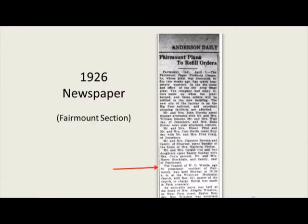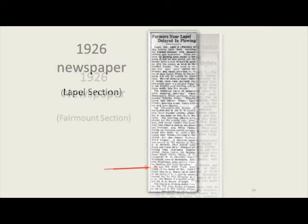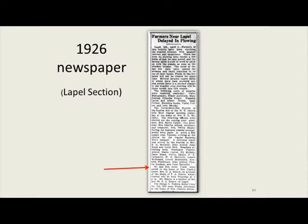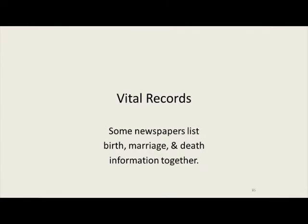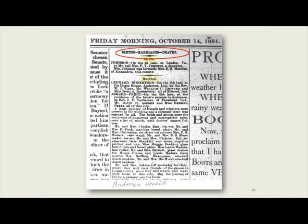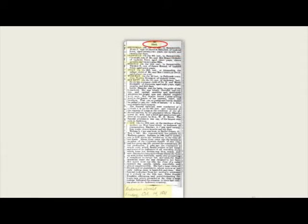Often when you're skimming for your ancestor's name, it pops out at you anyway. Here's the 1926 Fairmount section from the Anderson Daily Bulletin — lots of news with an obituary mixed in. Some newspapers list birth, marriage, and death information together. Here's an example with births, marriages, and deaths in a column — putting the people's last names in all capital letters makes them easier to find.